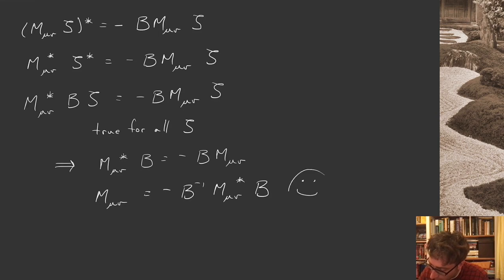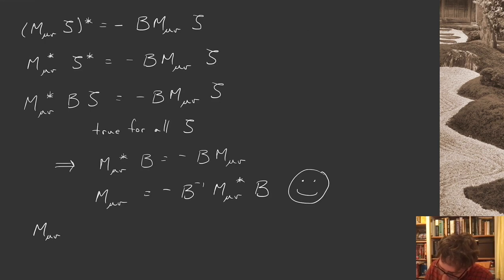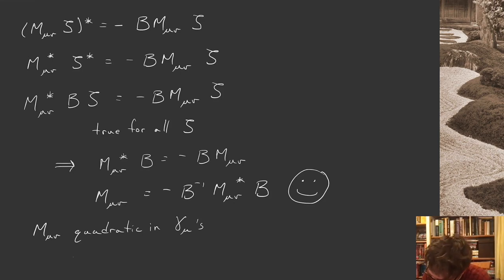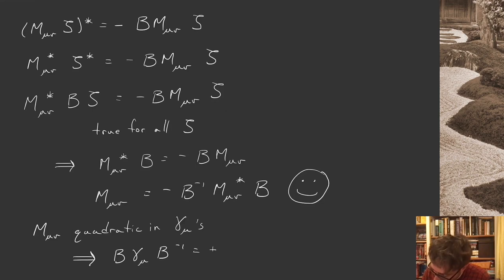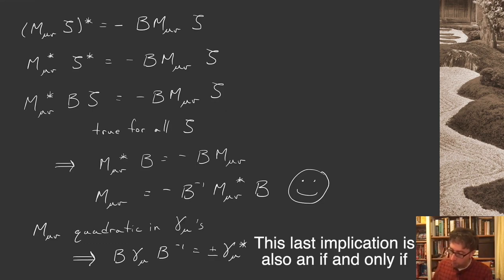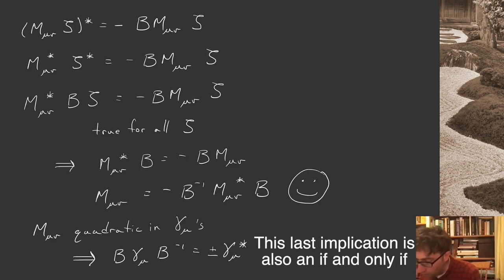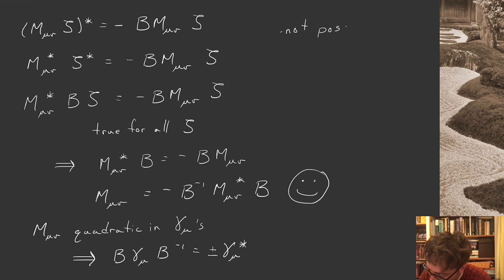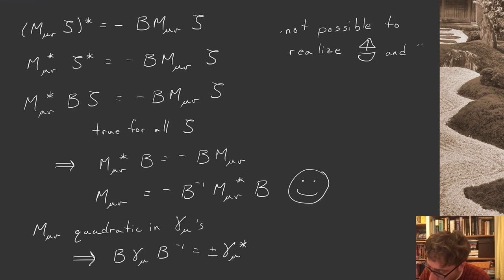The M_{μν}'s are quadratic in the gamma matrices, so this condition on M_{μν} implies a related condition on the gamma matrices themselves, but with a bit more flexibility: B γ^μ B⁻¹ = ± γ^{μ*}, since two minus signs from multiplying two gamma matrices cancel. It turns out it's not possible to realize both the sailboat and smiley face consistency conditions in every dimension — for example, in d=5 there are no Majorana spinors.